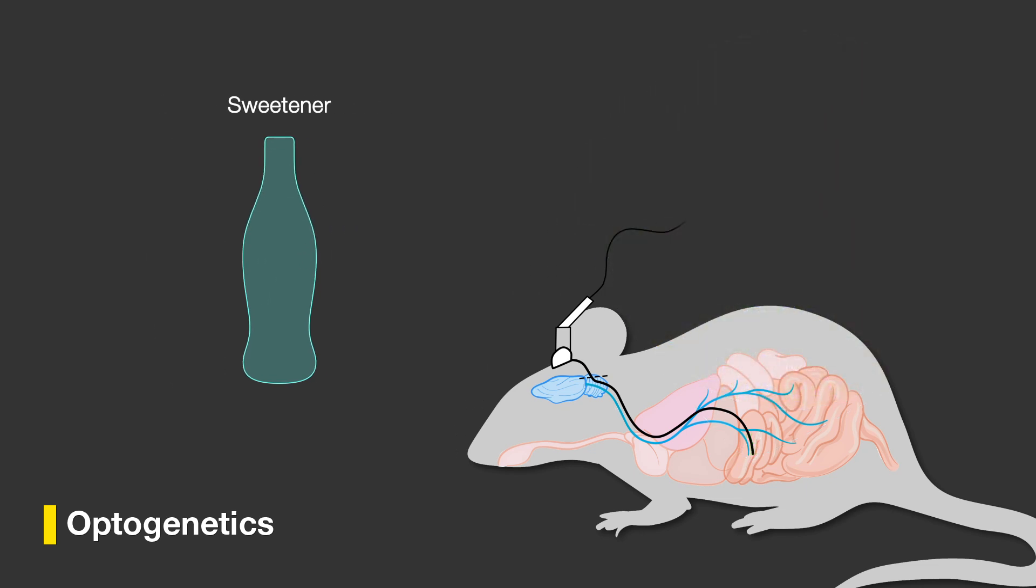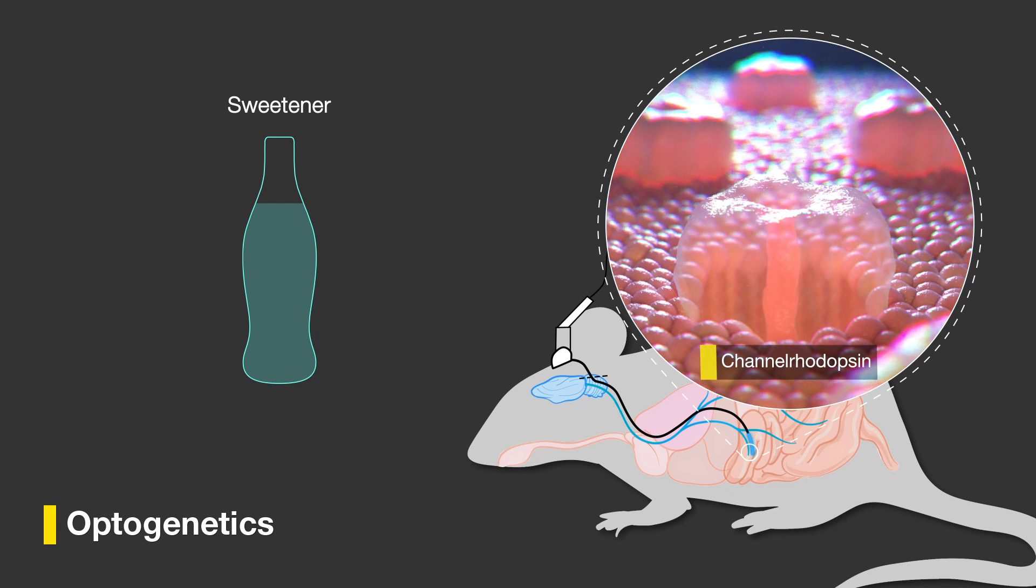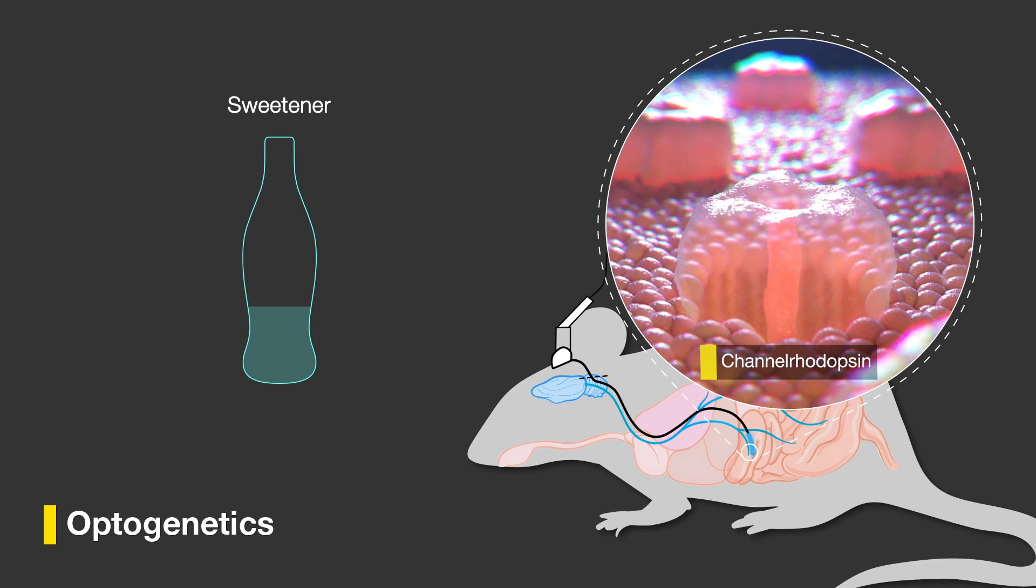A mouse presented with a bottle containing sweetener consumes only small amounts of the liquid. But exciting their neuropod cells causes the mouse to double its intake of the sweetener. It drinks the sweetener as if it was sugar.